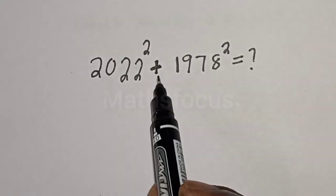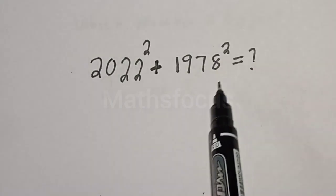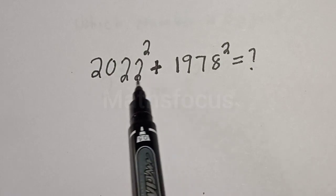2022 raised to power 2 plus 1978 raised to power 2 equals what? We want to quickly simplify this nice math problem without using a calculator. Solution: